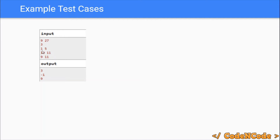There are three queries. In the first query, low=1 and high=5, so we need the highest number in [1,5] that divides both 9 and 27. Starting from 5: 5 doesn't divide both, 4 doesn't either, but 3 divides both 9 and 27, so the answer is 3. For range [10,11], neither 11 nor 10 divides both, so we print -1. For [9,11], 9 divides both, so the answer is 9.